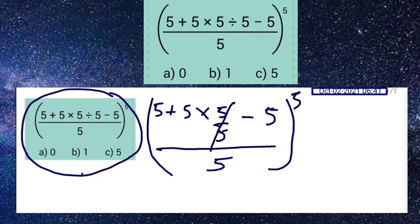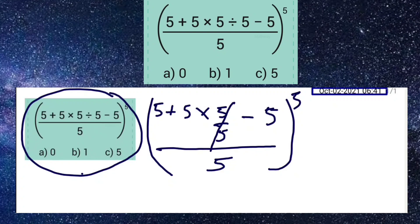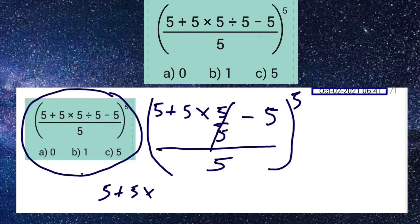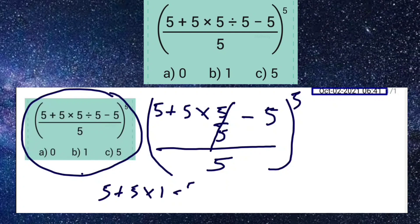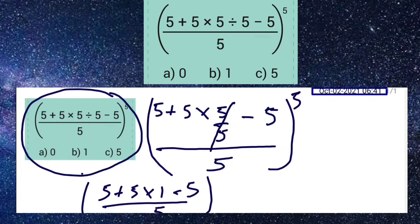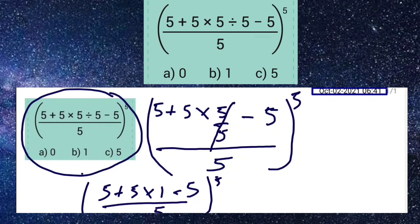Now how will it work? 5 plus 5 multiply 1 minus 5, divided by 5, and then raised to the power of 5.